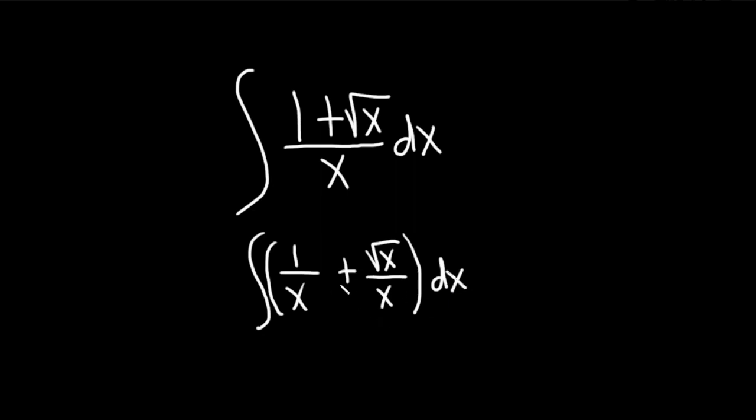You can check this by working backwards. We have a common denominator of x. When you add these you add straight across in the numerator: 1 plus square root of x is 1 plus square root of x.